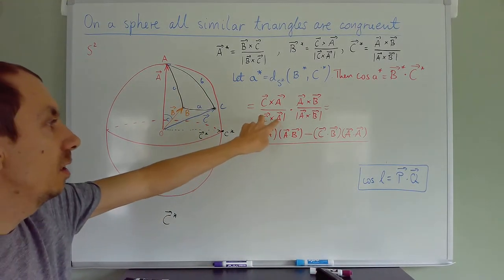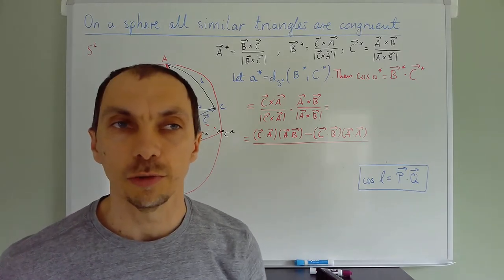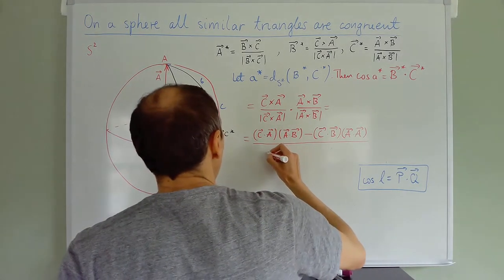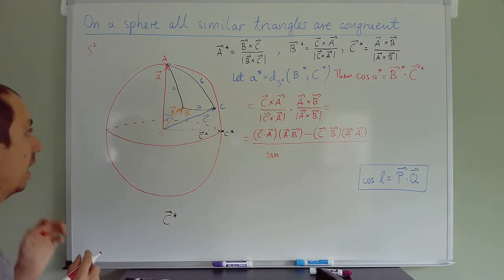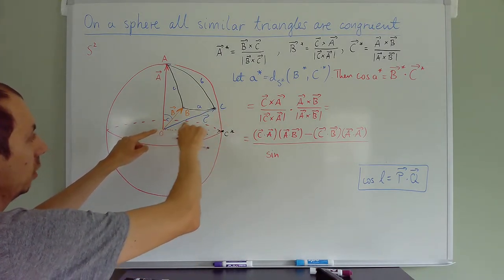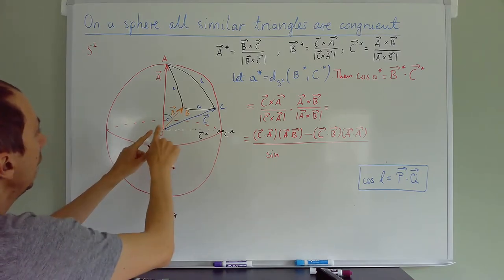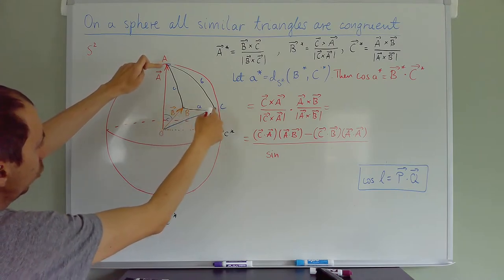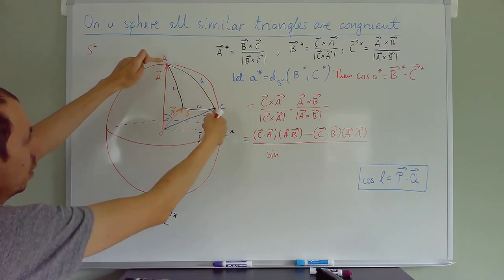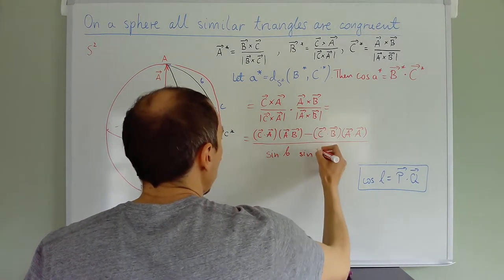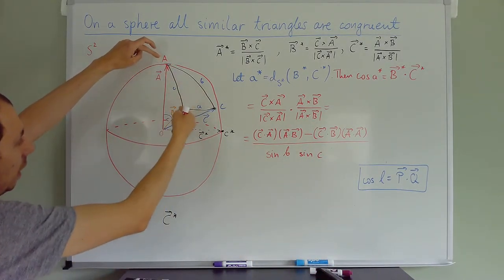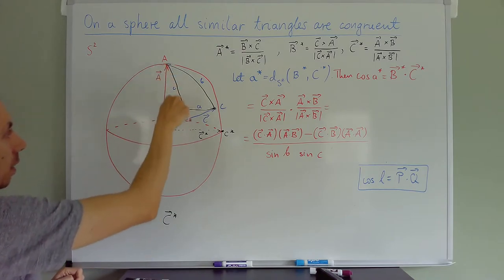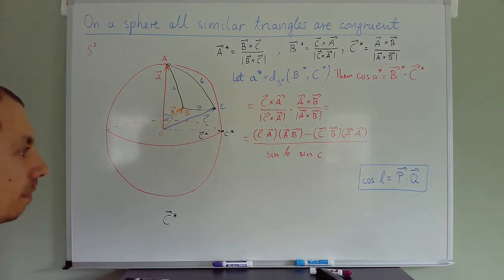What's the angle between C and A? The vector C and the vector A — the measure of that central angle is the same as the arc length on the sphere, which is b. So that gives sine b in the denominator; and the angle between A and B has measure c, so the other denominator factor is sine c. Now for the dot products in the numerator: C · A gives cosine b, since the angle between them measures b. A · B gives cosine c. And C · B gives cosine a.